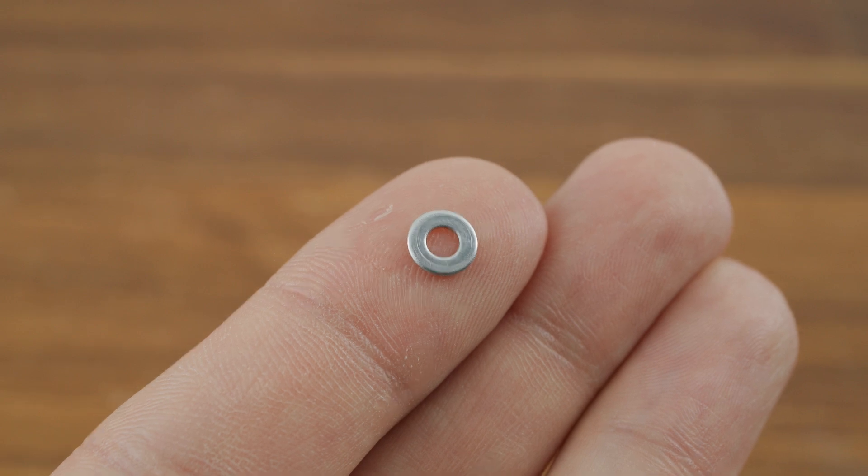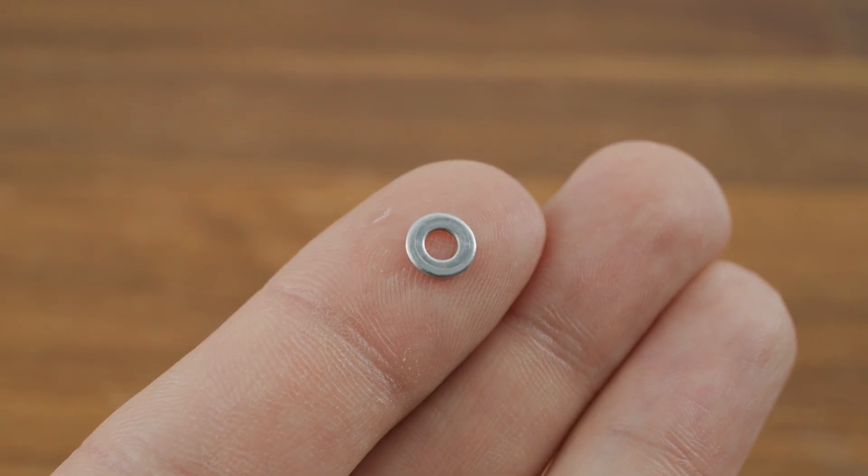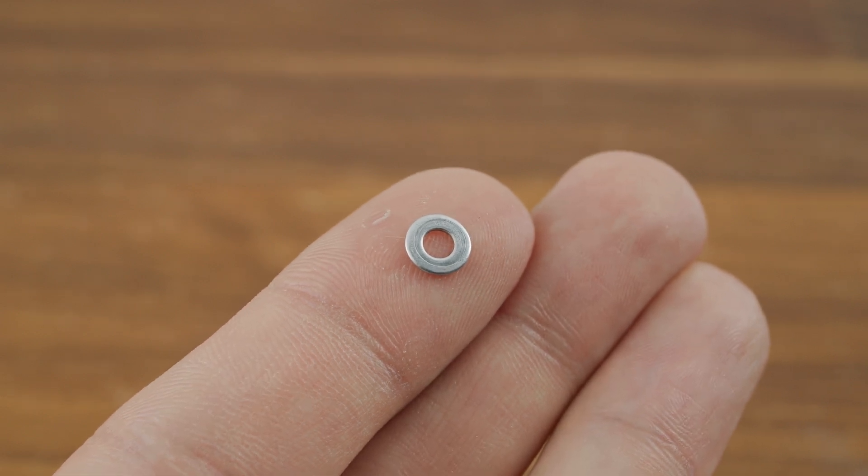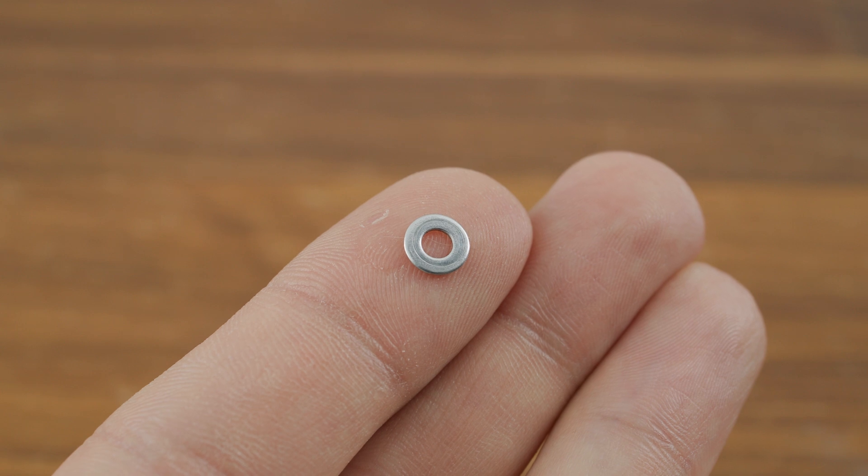If you prefer metal instead of plastic, then I don't understand why you are watching a video about a 3D printer. Anyway, instead of a 3D printed separator, you can use a washer with an outer diameter of 7mm. But I will tell you more about that later.